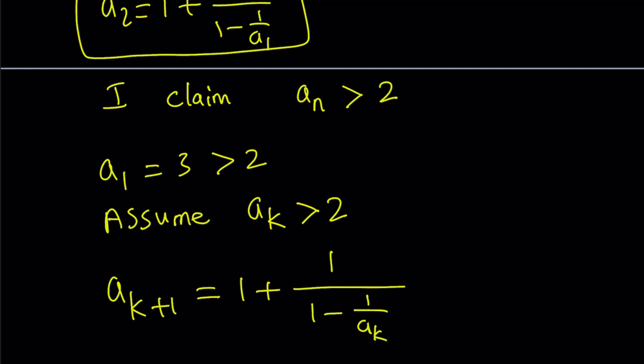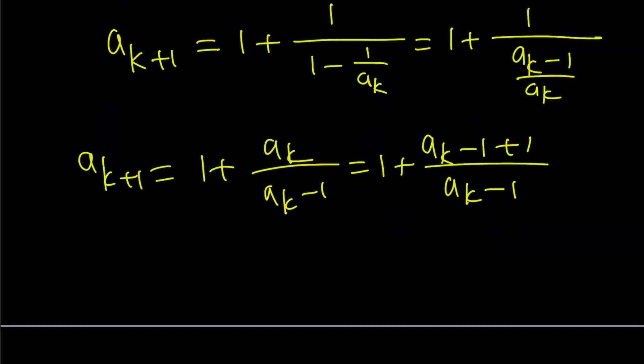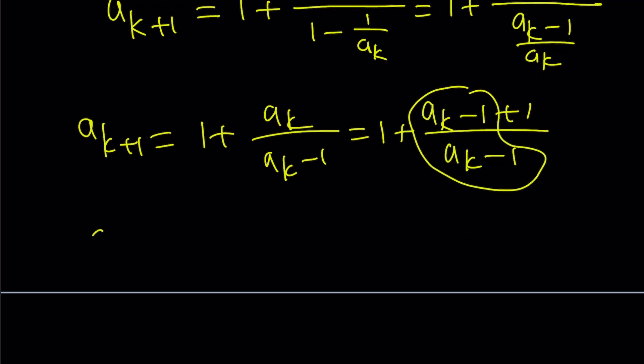Now, if you make a common denominator just like before, you're going to get a sub k minus 1 over a sub k. Flip and you're going to get a sub k plus 1 equals 1 plus a sub k over a sub k minus 1. Now I'm going to write this as a sub k minus 1 plus 1 because I want to split it up as much as possible. So a sub k plus 1 can be written as 1 plus 1 plus 1 over a sub k minus 1. And finally, a sub k plus 1 becomes 2 plus 1 over a sub k minus 1.